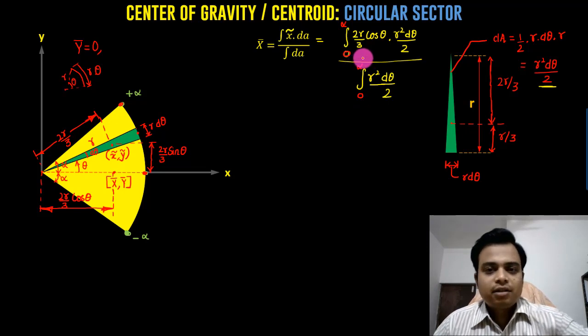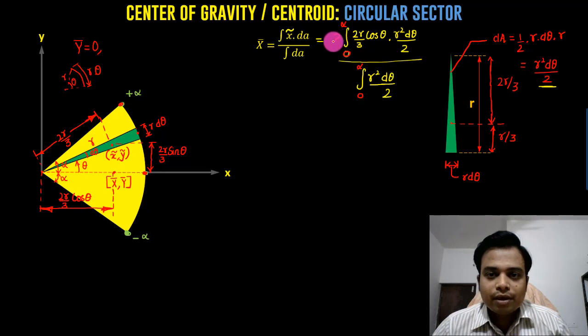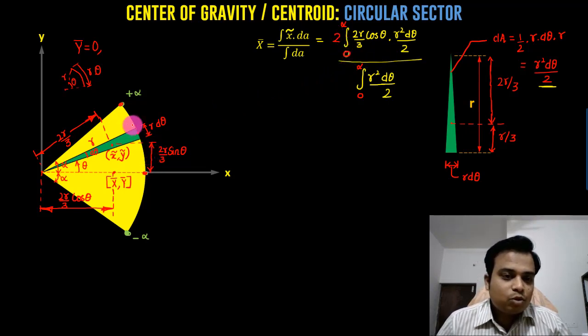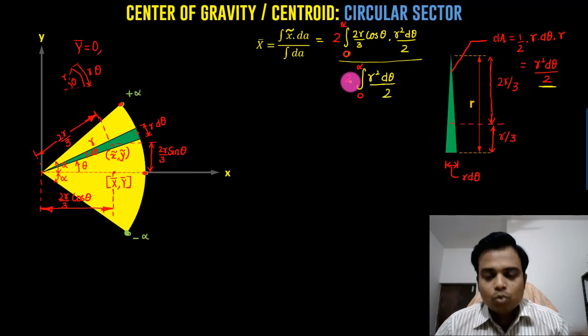The only change that you need to do in this expression is you need to put a 2 over here. If you take the limit from 0 to alpha, that essentially has to be doubled so that it can have the same impact as that of from minus alpha to plus alpha. Here also you need to put a 2.